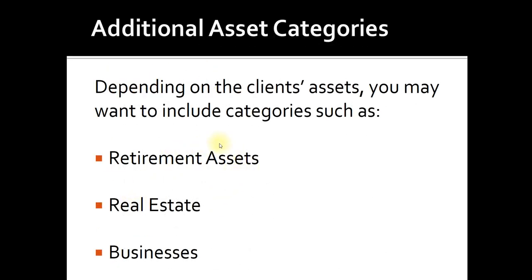A few additional asset categories you may want to consider adding to the balance sheet are retirement assets, real estate assets, and businesses the client may own. These are categories where if the client's real estate assets or business assets make sense to separate from investable assets, you may want to individually categorize those. For example, if you have several investment properties, you can list those out separately on your balance sheet.